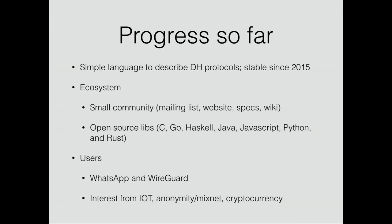We've built a small community around it with a mailing list, website, specifications, test suites, and open-source libraries in a bunch of common languages. We also have a couple of users: Noise-based protocols are used by WhatsApp for client-to-server communication, and WireGuard — a next-generation VPN tunnel project by Jason Donenfeld — also uses a Noise-based protocol. We're getting interest from IoT embedded systems, anonymity network systems, and the Lightning Network proposal for Bitcoin also incorporates a Noise-based protocol.